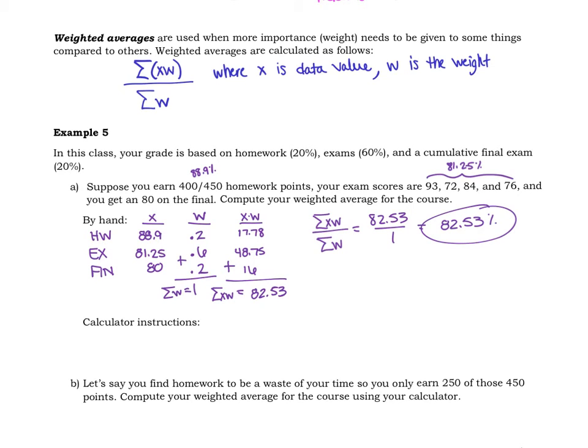How would you do that on a calculator? Well, you put the x values in L1, you put the w values in L2, and then you do a one-variable statistics with L1 as your list and your frequency list as L2, and then you look for the mean which is x-bar. You do still have to calculate though the homework average and the exam average.